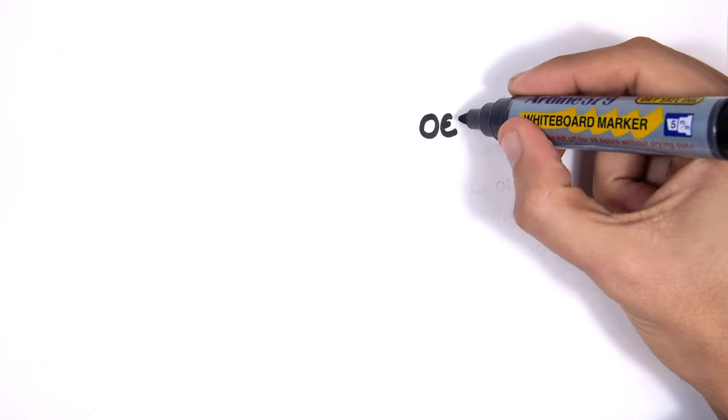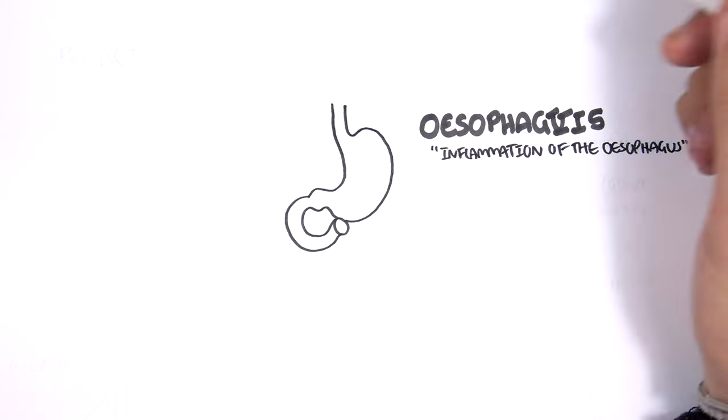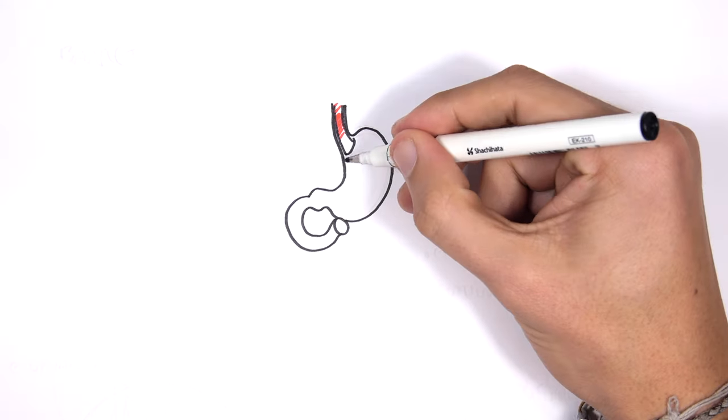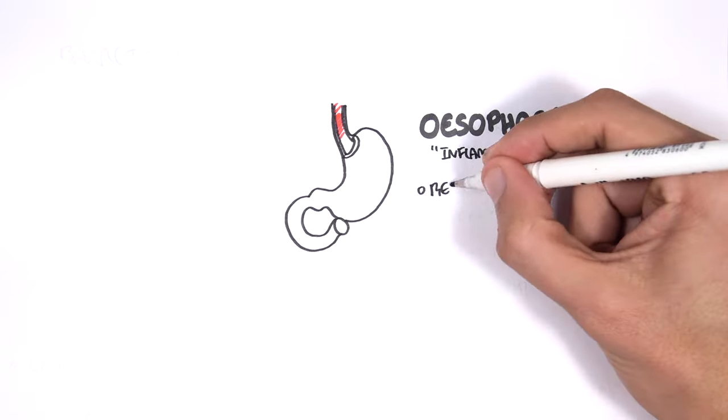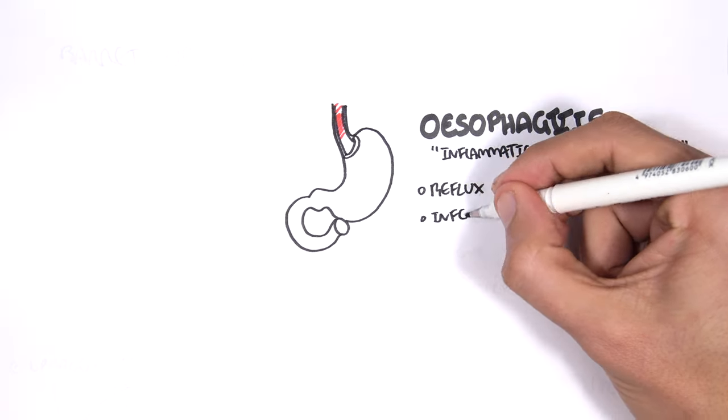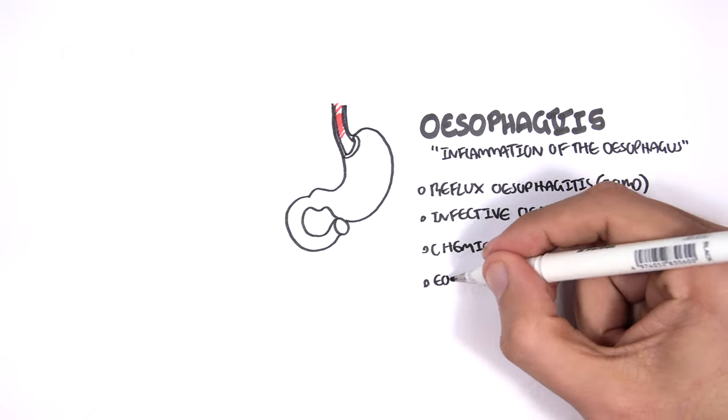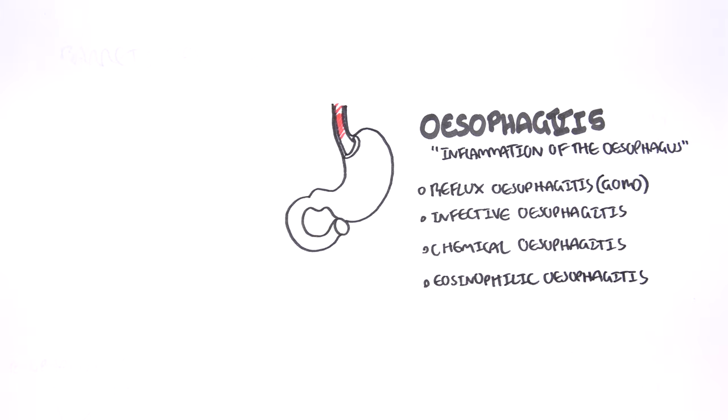Let us look at some common causes of upper GI bleeding, beginning with esophagitis, which is essentially inflammation of the esophagus. Here we have the stomach and an inflamed esophagus. There are different types: reflux esophagitis, GORD, infective esophagitis, chemical irritants, and eosinophilic esophagitis.